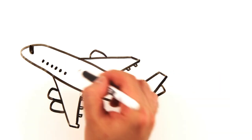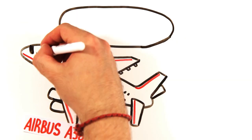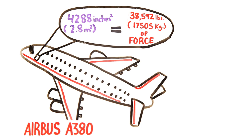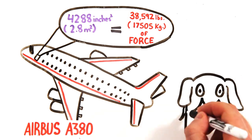Using the largest commercial airplane, the Airbus A380, as an example, the main door measures 4,288 square inches, meaning 38,592 pounds of force would be required to even begin to open it.